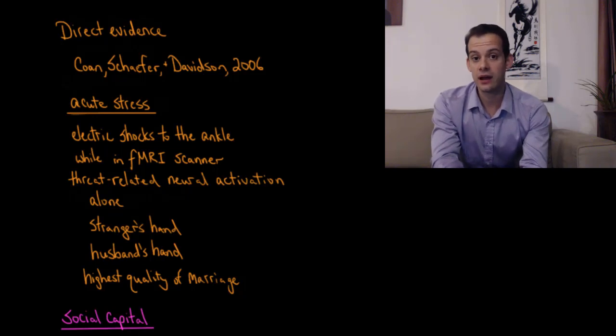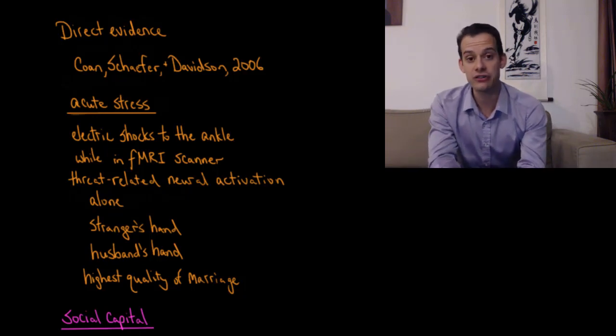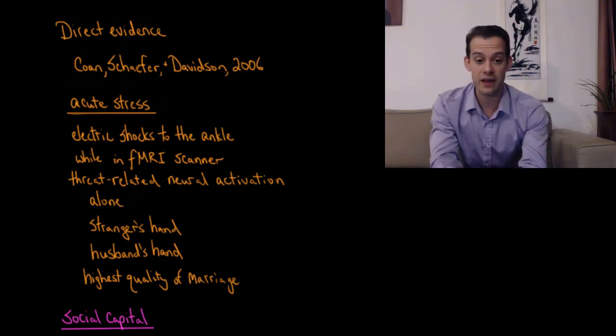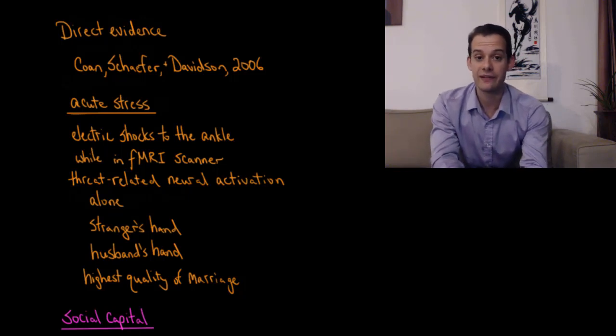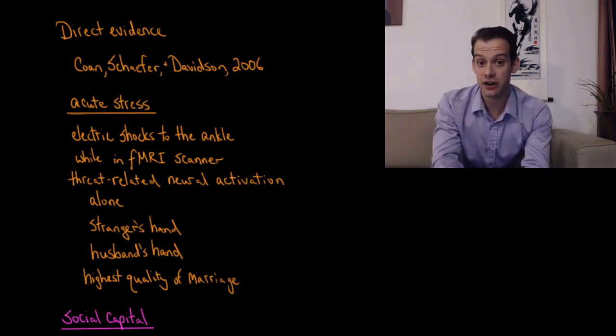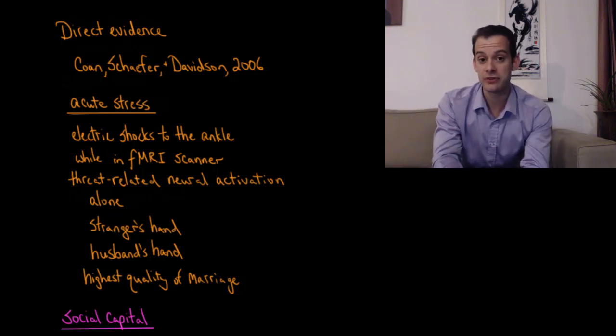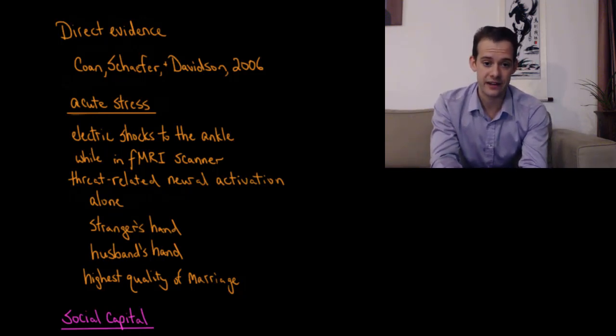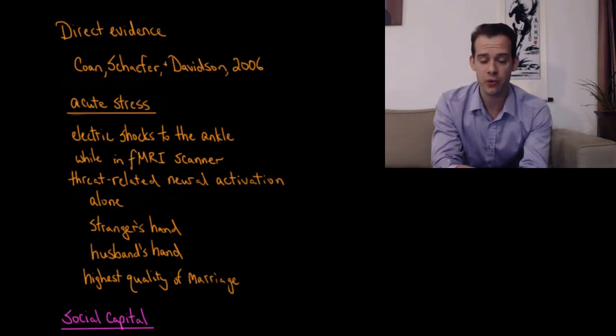So the women in this group had to go into the scanner. They didn't have any social support. And then a second group of the women had a stranger that they could get support from. A stranger's hand that they could hold while they're in the fMRI scanner and they're going to receive these electric shocks to their ankle. And then a third group was able to hold their husband's hand. So here we have a more personal type of social support that's being provided.